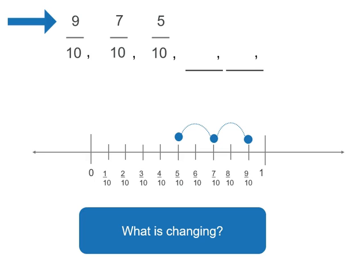So we're decreasing by 2 tenths. So our next number is going to be the same. We're going to decrease by 2 tenths. 5 minus 2 is 3. So we have 3 tenths. And our final number in the pattern, we're going to decrease by 2 tenths again. And we have 1 tenth.